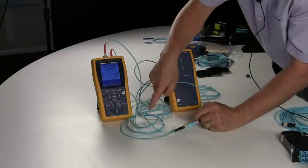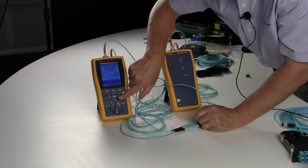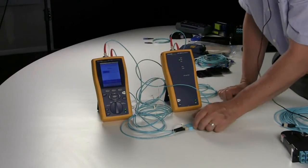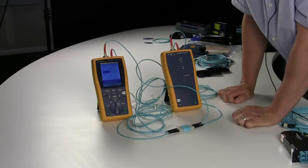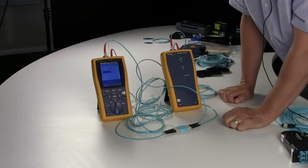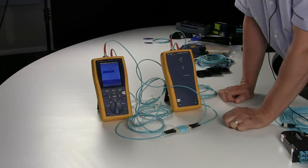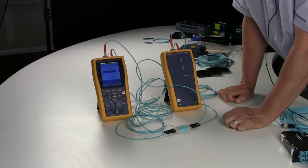Once this is done, you can go to auto test, hit test, and it will test and give you a value. Once again, for SCs, it needs to be 0.25 dB or less in order to qualify for a good reference cord.